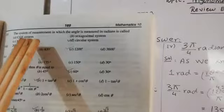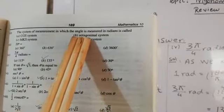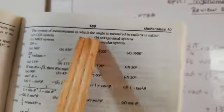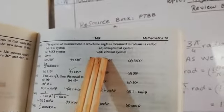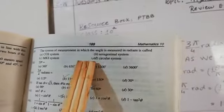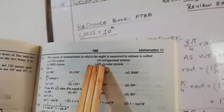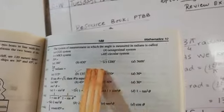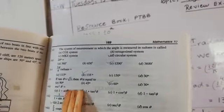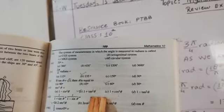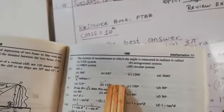Now option number two: the system of measurement in which the angle is measured in radians is called. We have discussed that there are two methods to measure the angle — degree and radian. When discussing angles present in a circle, we measure them in radians. So the right option is the circular system. The next options will be solved on the board as they have working columns.